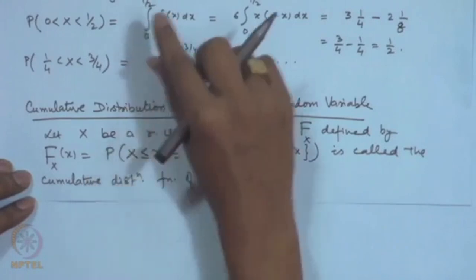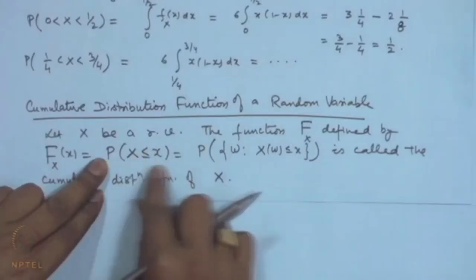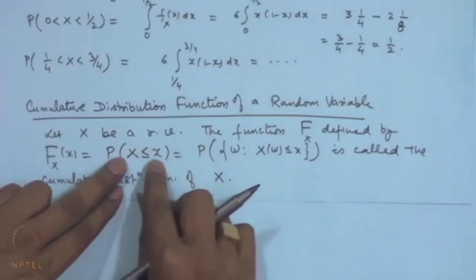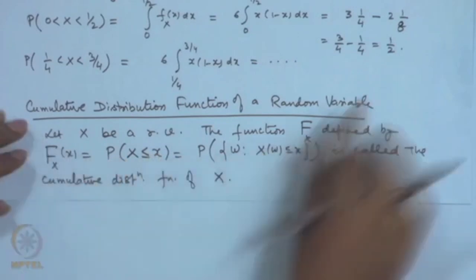When we defined the PMF or PDF, we made a distinction between discrete and continuous. For a discrete random variable we defined the probability mass function; for continuous, the probability density function. But the cumulative distribution function makes no such distinction — it is a more general function applicable to discrete, continuous, and mixed random variables. When x increases, the set {X ≤ x} increases, so the CDF will satisfy certain desirable properties.